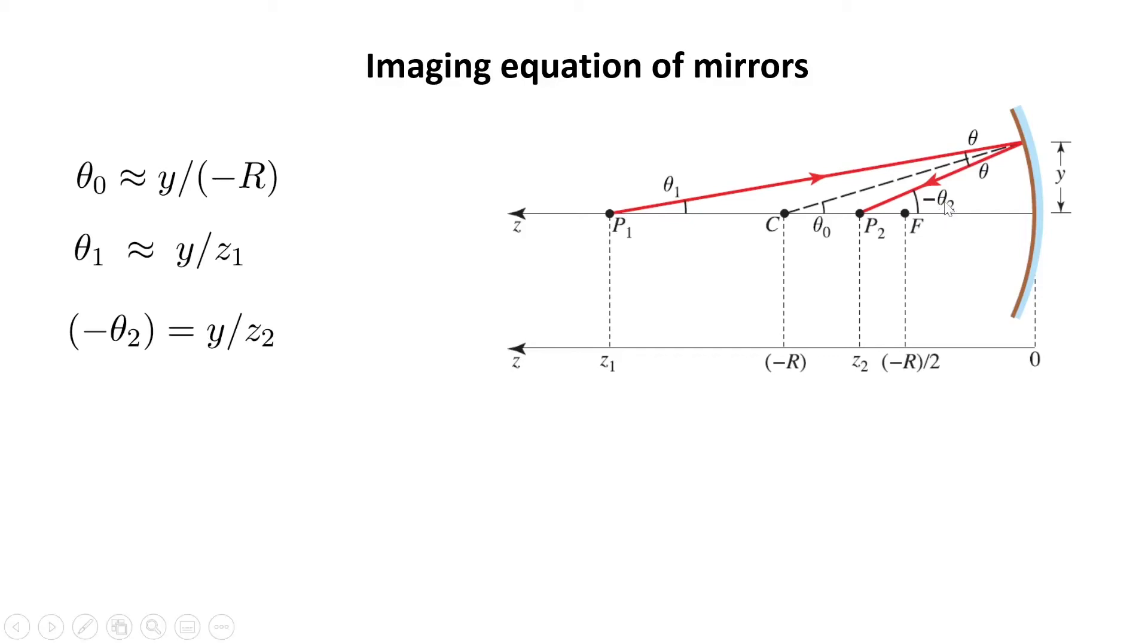Also, I can write minus theta 2 as y divided by this distance, which is z2.